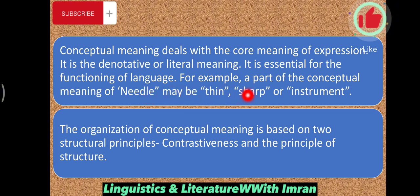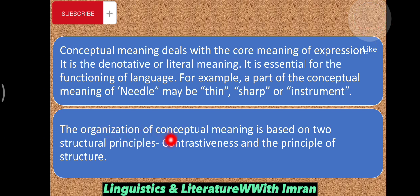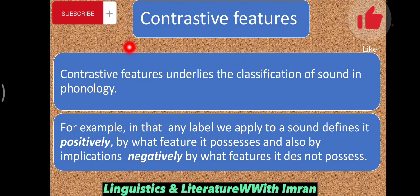For example, a part of the conceptual meaning of 'needle' may be 'thin', 'sharp', or 'instrument' — and all people agree upon this, as you can find it in the dictionary. The organization of conceptual meaning is based on two structural principles. The first is contrastiveness, because the meaning of one word is contrasted from another one. The second is the principle of structure. So we have structure and we have contrastiveness.